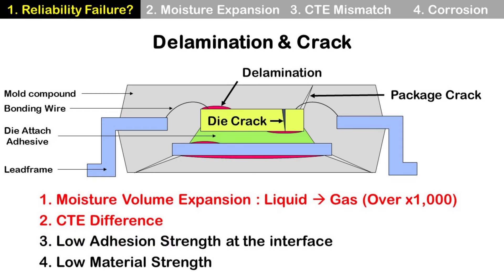Other causes include low adhesion strength at the material interface — for example, low adhesion strength between die and mold compound — or low material strength, for example, low material strength of die and mold compound.